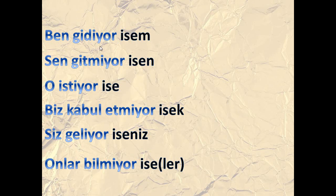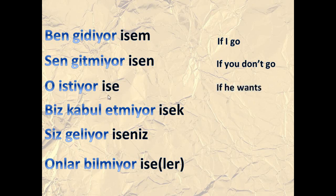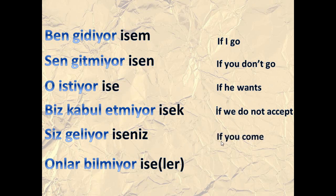Here we have the form of using 'if' when we are using the verb. Ben gidiyor isam means 'if I go.' Sen gitmiyor isan means 'if you don't go.' O istiyor ise means 'if he wants.' Biz kabul etmiyor isek means 'if we do not accept' — kabul etmek means 'accepting.' Siz geliyor iseniz means 'if you come.' Onlar bilmiyor ise means 'if they do not know.'